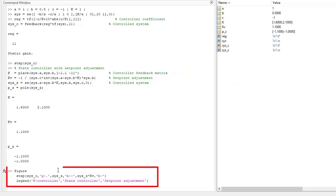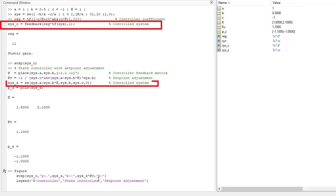Then, we can plot all these three systems. The system controlled with the P controller, with the state controller, and with setpoint adjustments.